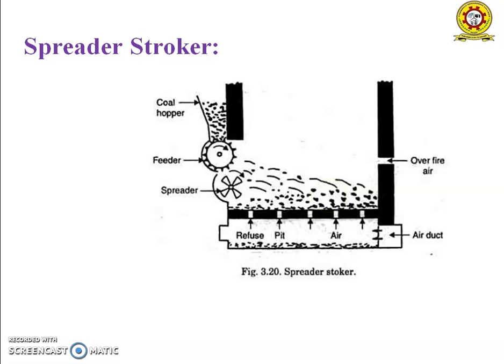This type of stoker can be used for boiler capacities ranging from 70,000 kg to 140,000 kg of steam per hour. The heat release rate of 10 × 10^6 kilocalorie per meter square hour is used. The speed of the stoker is 15 to 50 cm per minute. The coal bed thickness is shown at all times by an index plate, which can be regulated either by adjusting the opening of the fuel gate or by speed control of the stoker driving motor.